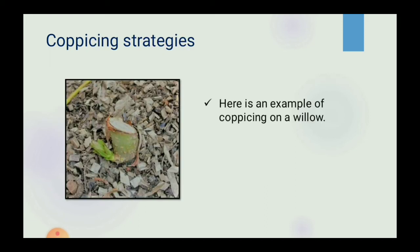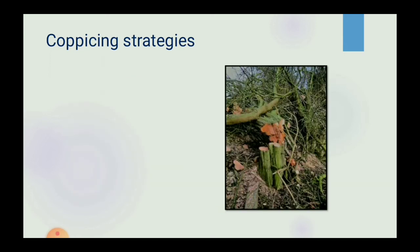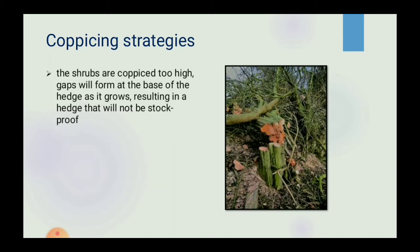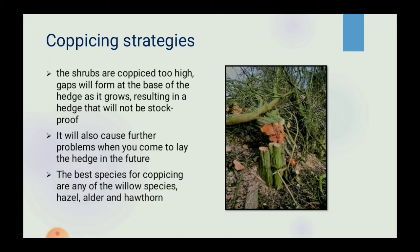Here is a picture showing an example of coppicing on a willow. We can notice the new growth coming from below the cut. The cut is angled downward to deflect water. If shrubs are coppiced too high, gaps will form at the base of the hedge as it grows, resulting in a hedge that will not be stock-proof. This will also cause further problems when you come to lay the hedge in the future. The best species for coppicing are any of the willow species, hazel, alder and hawthorn.